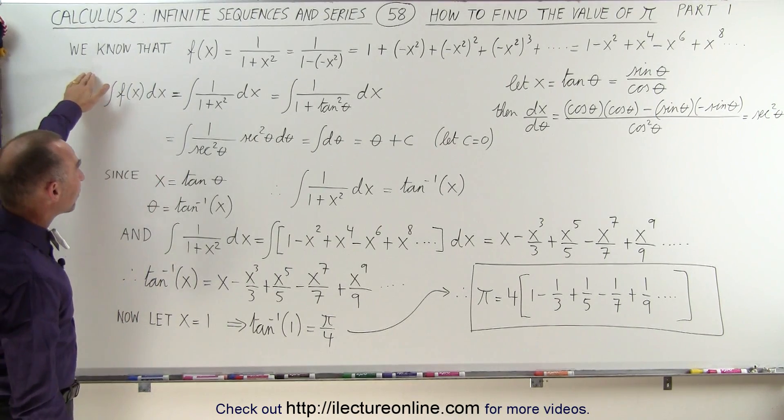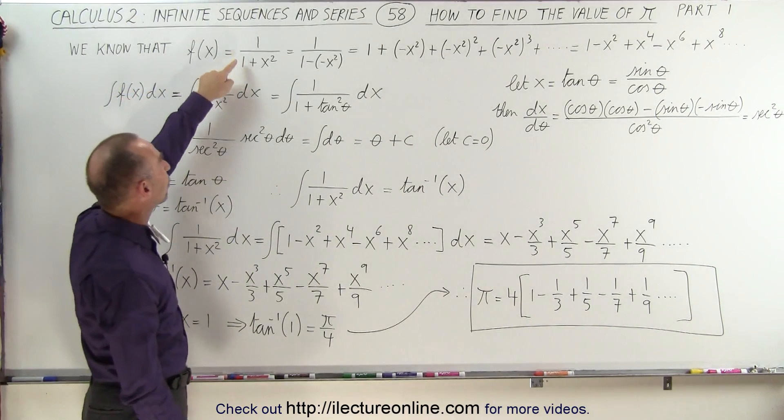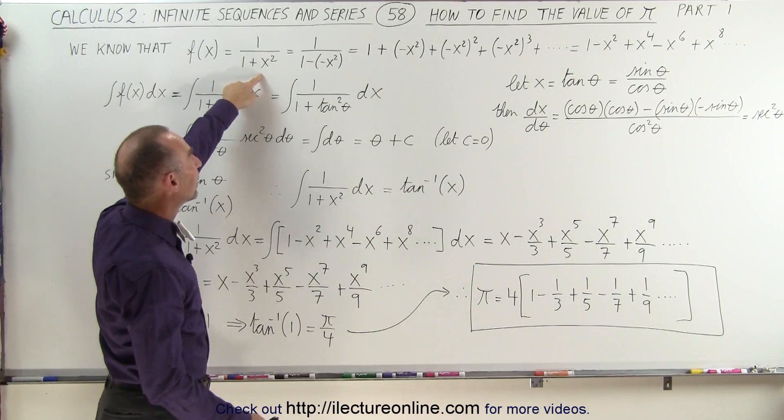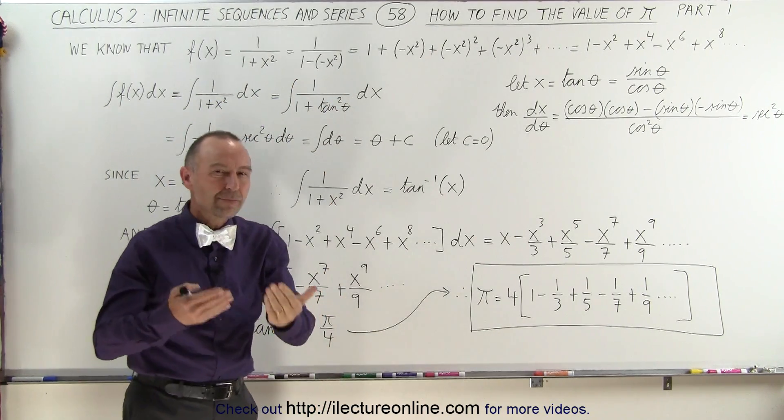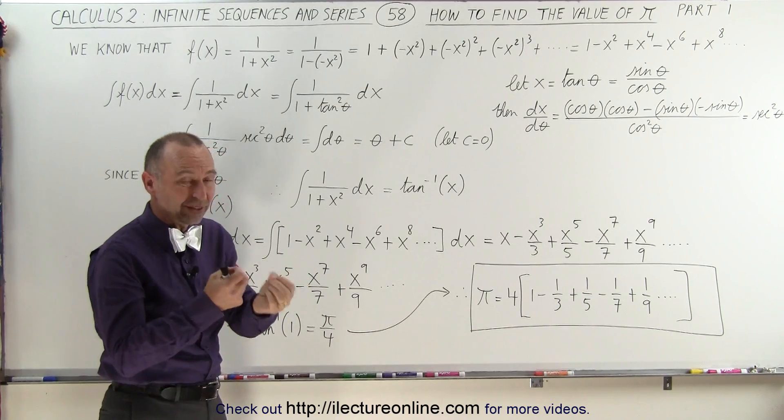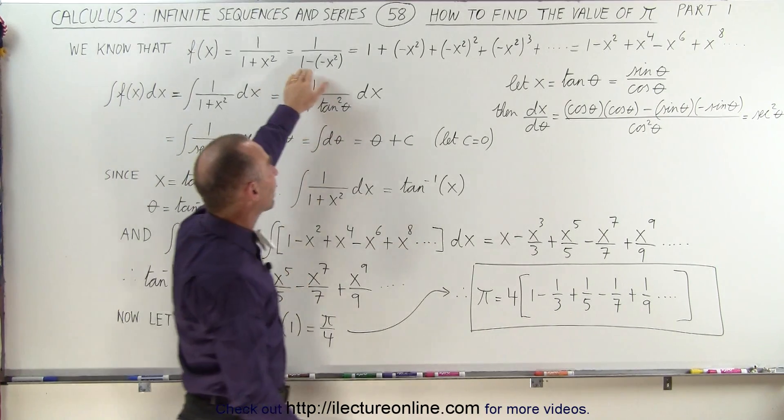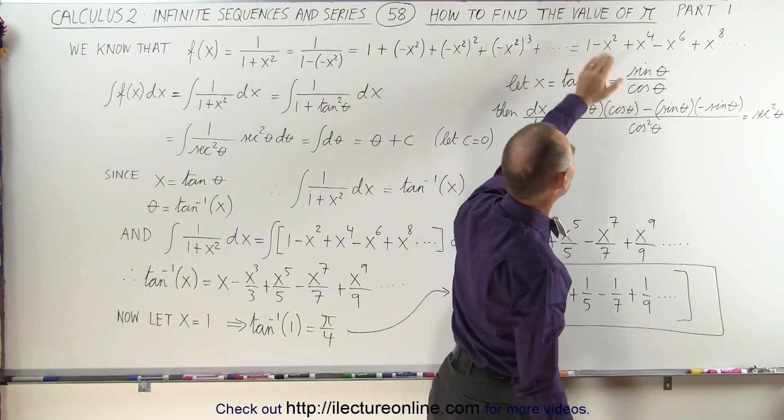Starting with the function that we've seen before, f(x) equals 1 over 1 plus x squared, we can write it as follows. Then using the geometric series, which is a subset of the power series, we can write it out as an infinite sum of these terms right here.